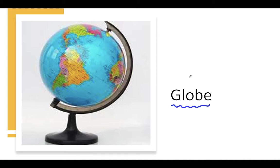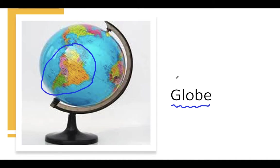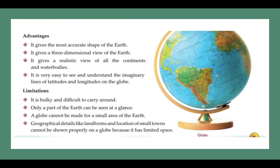A globe is an object which represents the spherical shape of the earth. On that globe, the map of the world is printed on it, and it is a three-dimensional model or 3D model.